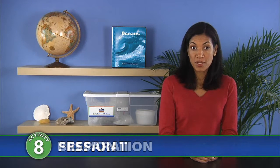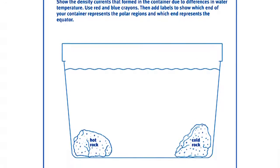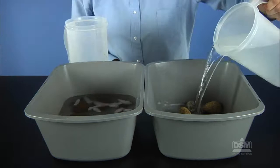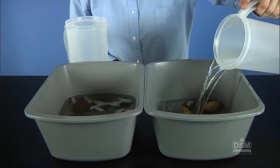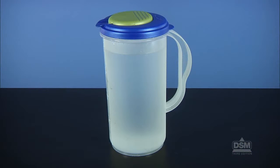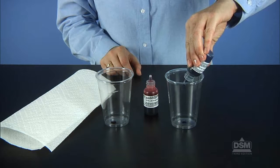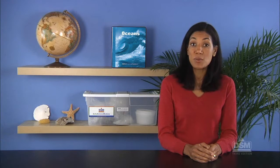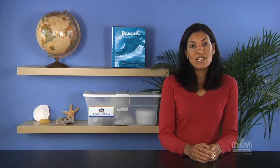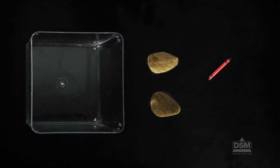To prepare for Session 2, make a copy of Activity Sheet 8, Part B for each student. Fill one bucket with ice water and place half of the rocks in it. Fill the other with very hot water and place the rest of the rocks in it. Let the buckets of rocks and water sit for at least 15 minutes to give the rocks time to heat up or cool down. Then fill a large pitcher with tap water and place two to three drops of red and blue food coloring into plastic cups so that each team can have a small sample of each color. Make sure to have paper towels on hand in case of spills. Each team of four will need a one-gallon plastic container, two small rocks, a red crayon, and a blue crayon.